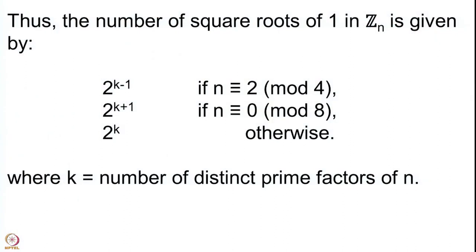To summarize the general formula: if 2 divides n but 4 does not, there are exactly 2^{k−1} solutions; if n is odd or 4 divides n but 8 does not, there are exactly 2^k solutions; and if 8 divides n, there are exactly 2^{k+1} solutions. This has been a somewhat intricate analysis of computing the square roots of 1 in Z mod n·Z.